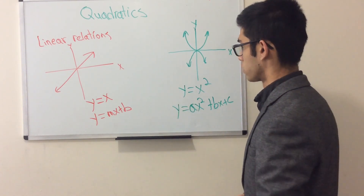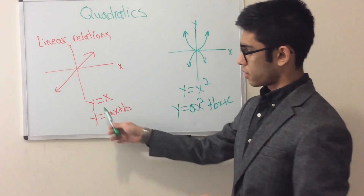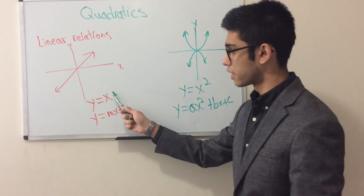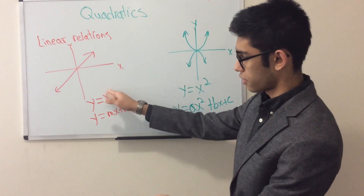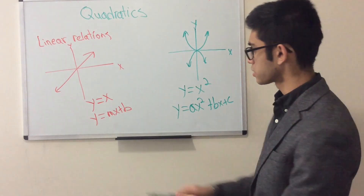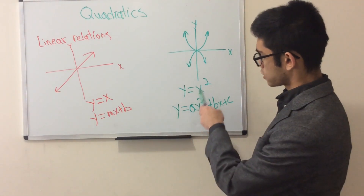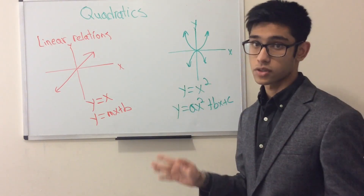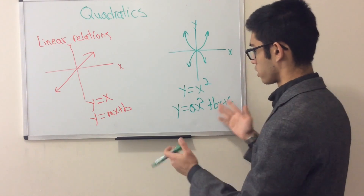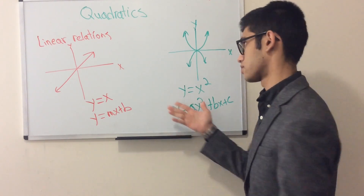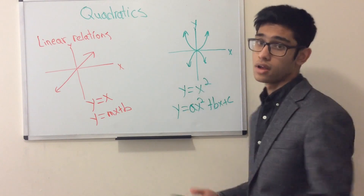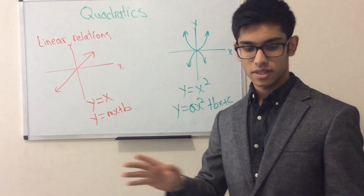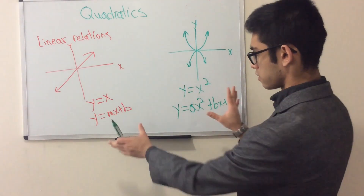One important thing to notice: for linear relations there's no squared or cubed term — it's just x (with an implied power of one). But whenever you see x squared, you can right away say it's quadratic. However, x squared must be the highest power. If there's also an x cubed, then it's not quadratic. As long as x squared is the highest power, it is quadratic.